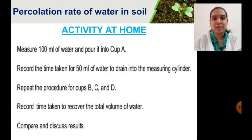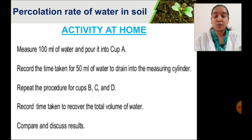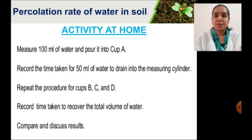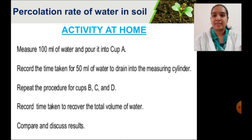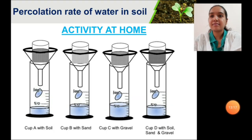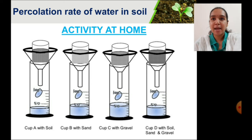Pour the measured water into the paper cup and start recording the time when you begin pouring. Also record the time when you see dripping from the funnel — that is the percolation time. Repeat the same experiment for other soil samples and compare the percolation rate for each soil sample. This is how the activity is done at home or in a laboratory using different samples of soil in different cups.